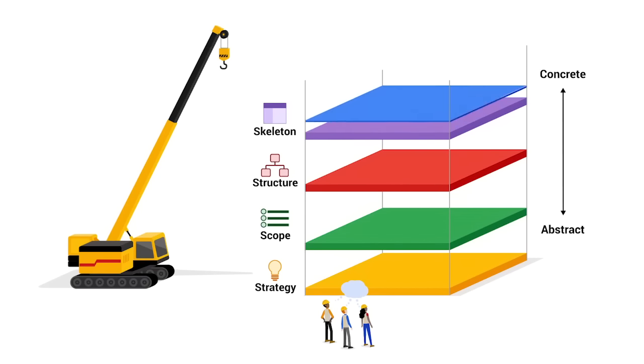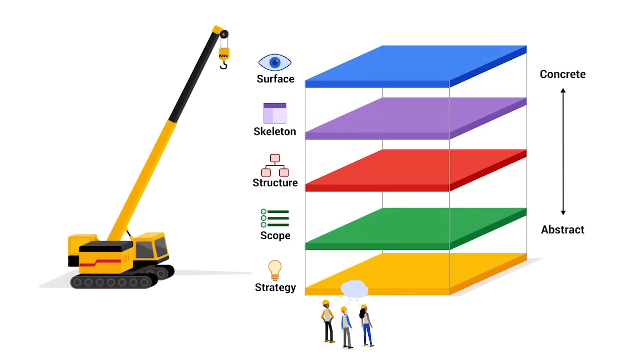Instead, you'll see the surface, which is the top level of the user experience — how the product looks to the user. To recap, we have strategy, scope, structure, skeleton, and surface. Together, these layers make up the five elements framework.